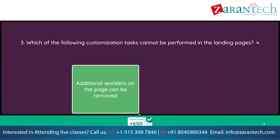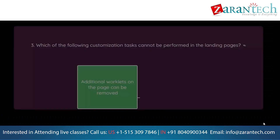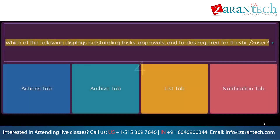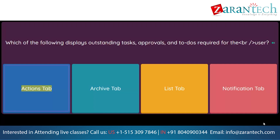Which of the following displays outstanding tasks, approvals, and to-dos required for the user? Option 1: Actions tab. Option 2: Archive tab. Option 3: List tab. Option 4: Notification tab.